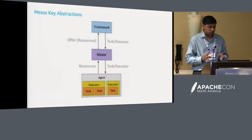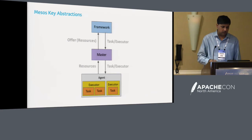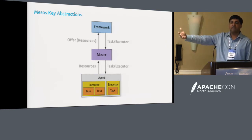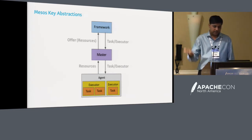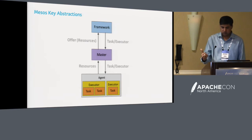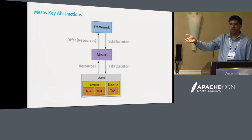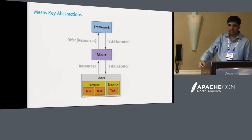Key abstractions in the Mesos model: agents are where application workloads run and advertise resources — memory, CPU, disk, GPU — to the master. The master advertises these resources to frameworks, which compete for them for different workloads. Frameworks decide which offers best match the application workloads and tell the master: take resources from host one and host five, and here is the executor to launch that task. The master contacts those agents, launches the task, and says to use that executor.